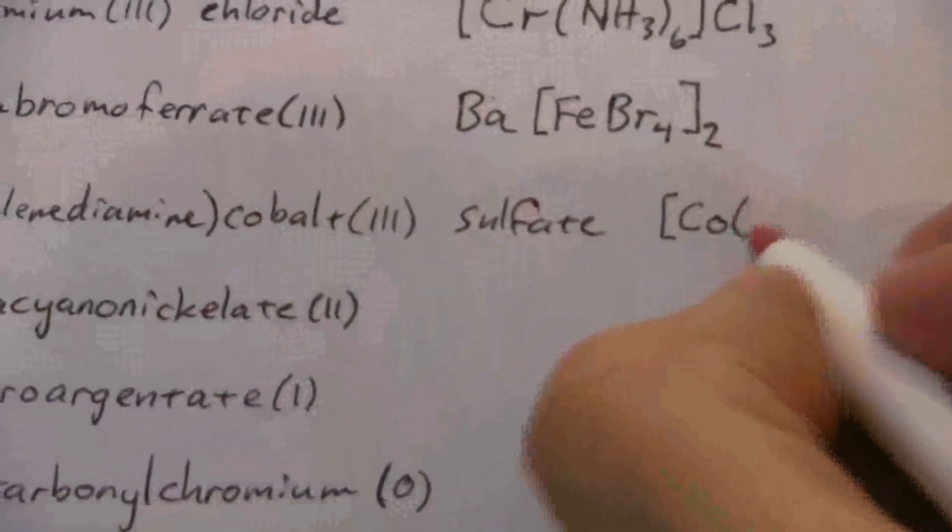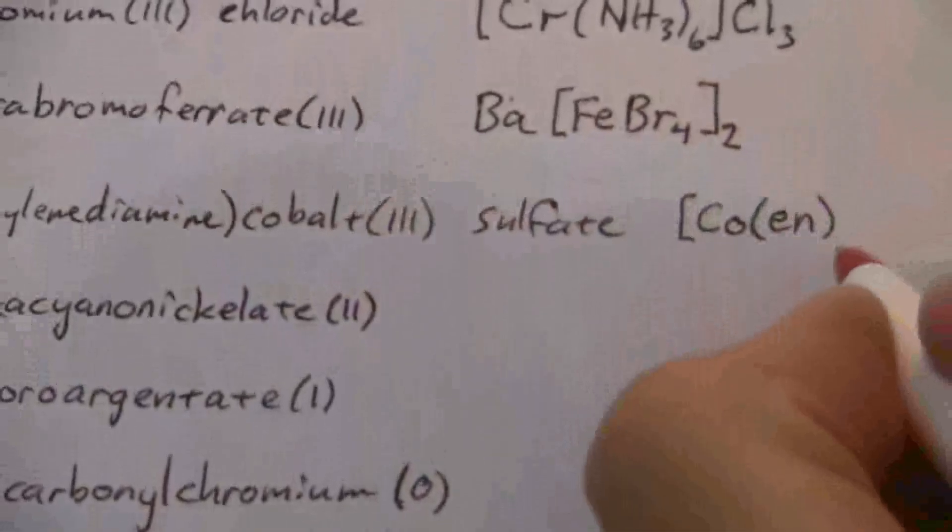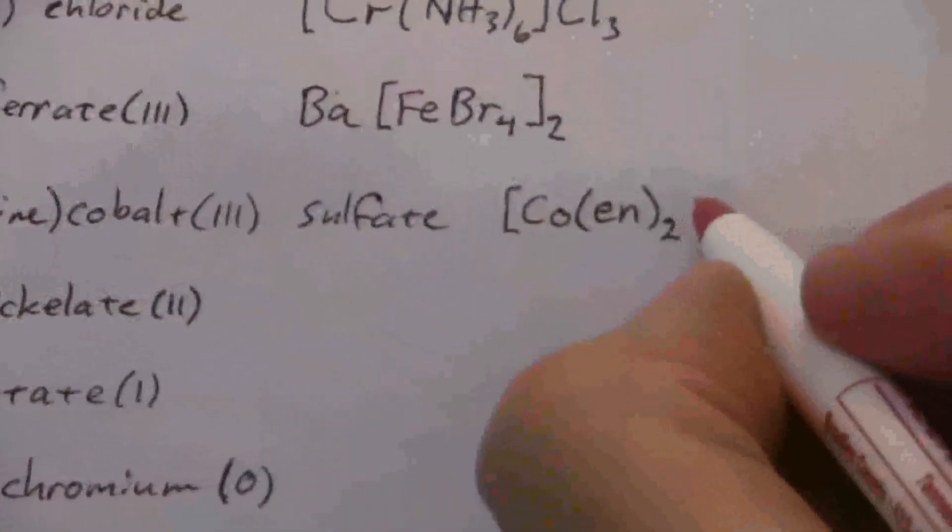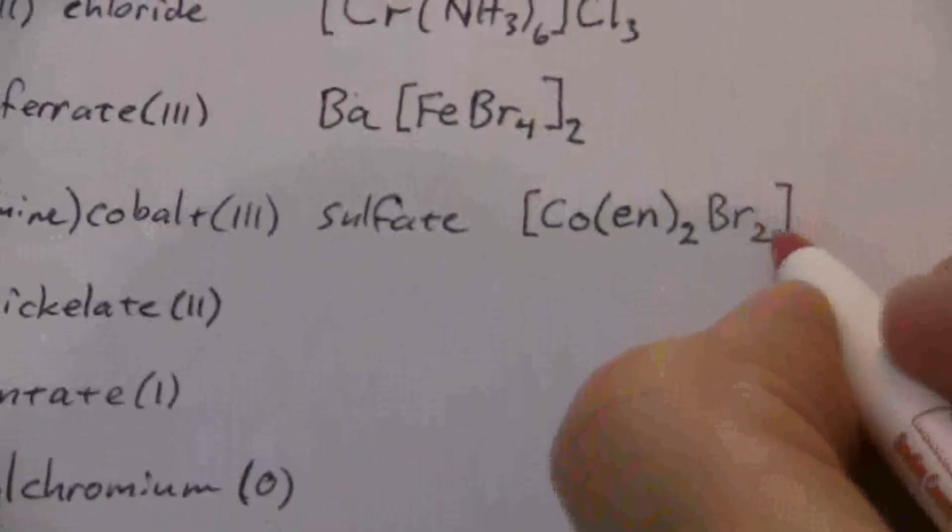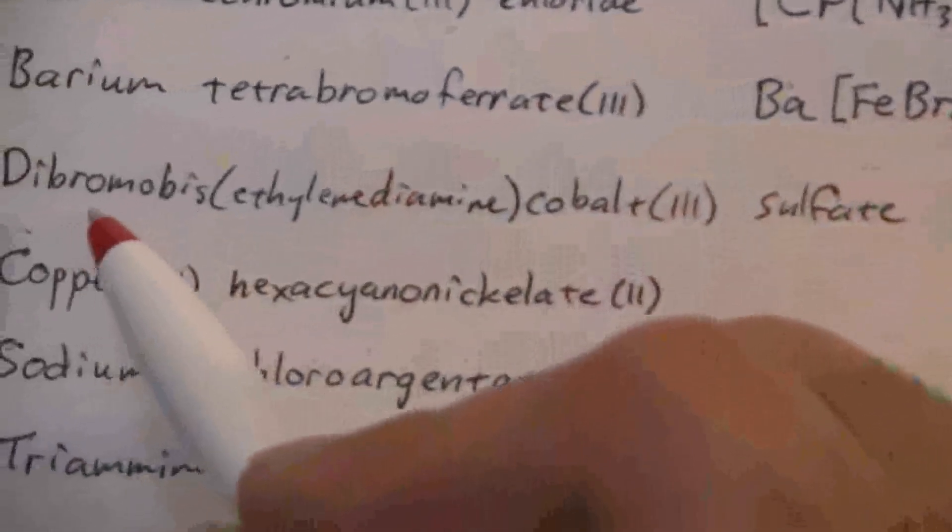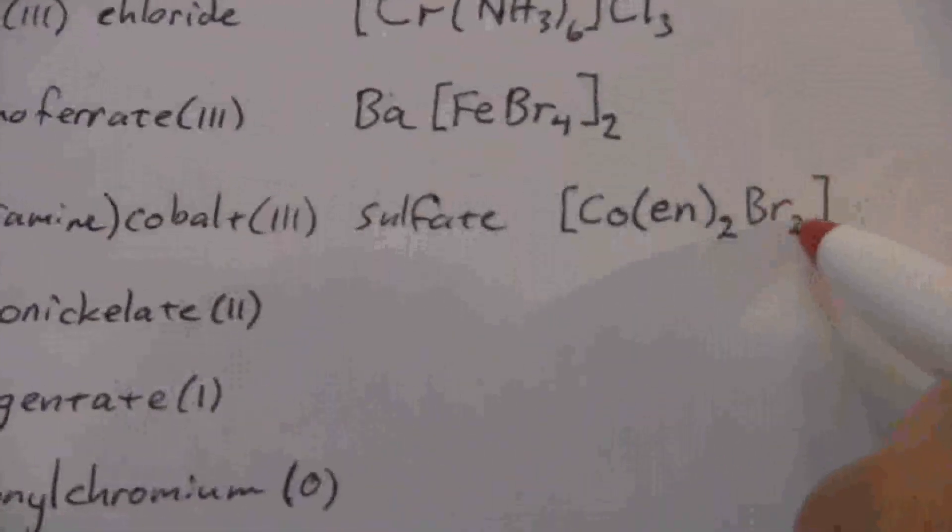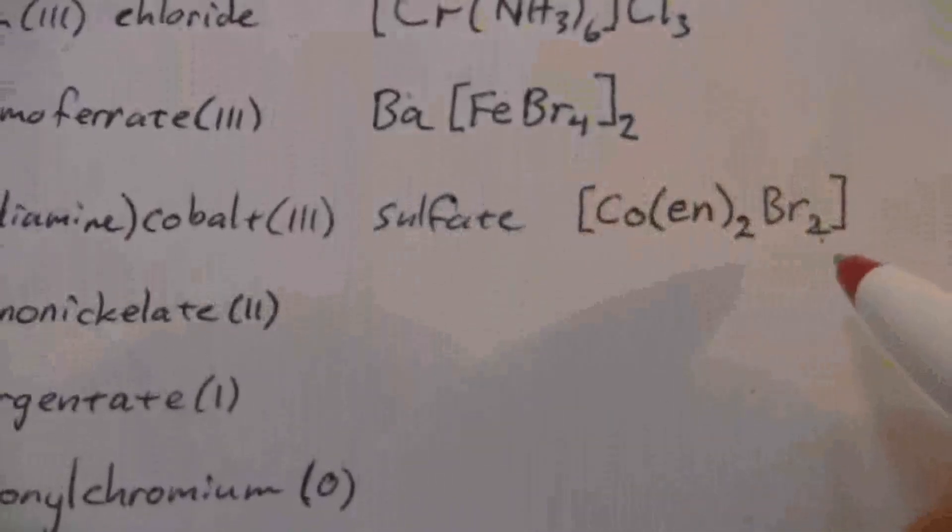So we're going to have ethylenediamine, and we can just abbreviate that using EN, and it is bis(ethylenediamine), which means we have two of those, and dibromo, so we put the Br2 there, and there is our cation, it's cobalt(III). We have the dibromo, that gives me negative two, positive three, so all together I have a positive one.